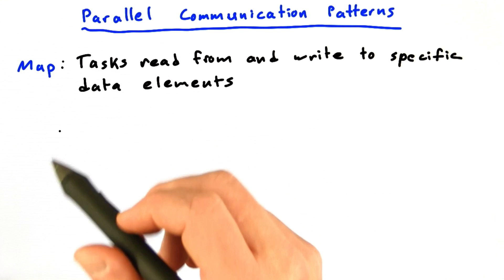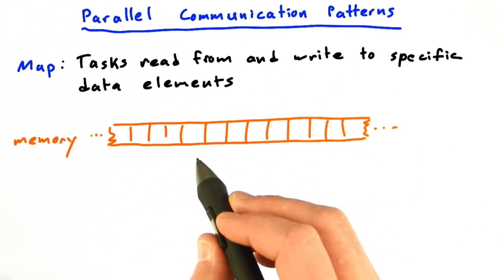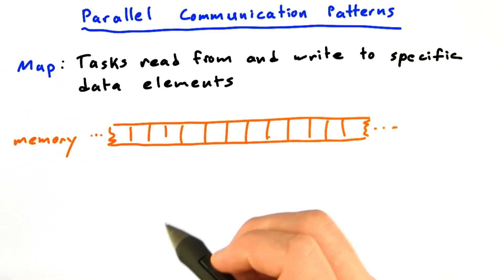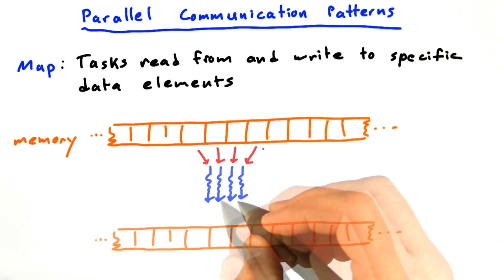The communication pattern you've already seen is called map. With map, you've got many data elements, such as elements of an array, or entries in a matrix, or pixels in an image, and you're going to do the same function, or computational task, on each piece of data.